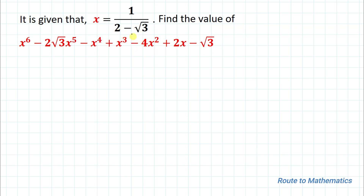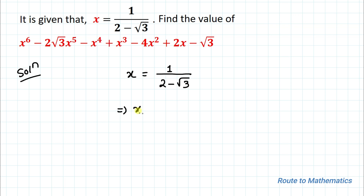We have given the value of x and we are asked to find the value of this given expression. Without any delay, let's start the solution. Our value of x is 1 divided by (2 minus √3). Whenever we see a radical value in a denominator, the first thing that comes to mind is to eliminate this radical value. To do so, we will apply the rationalization method.